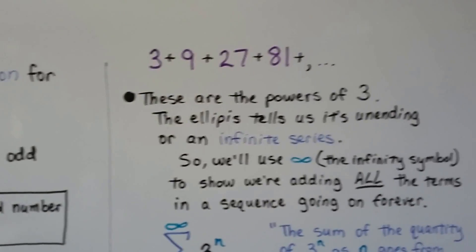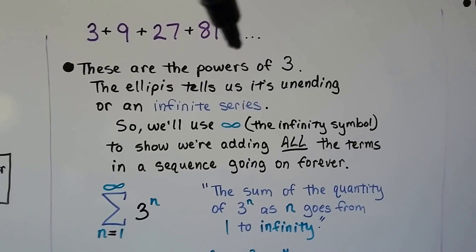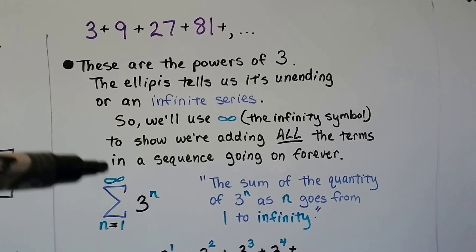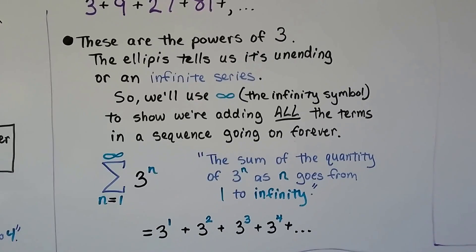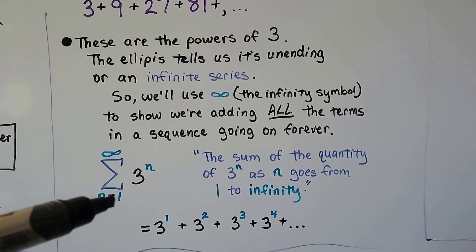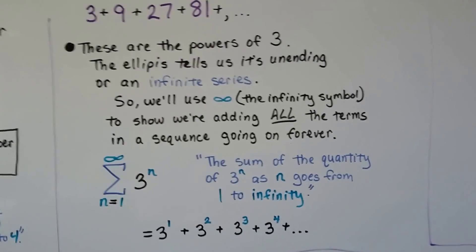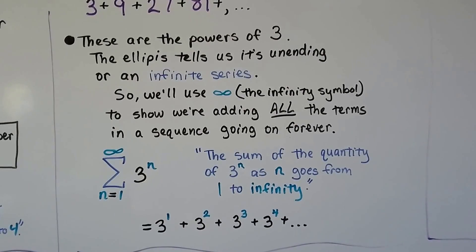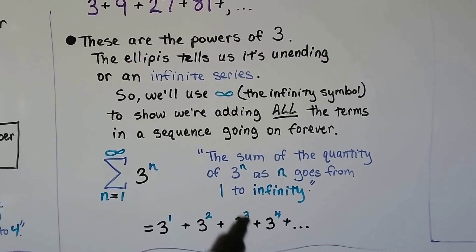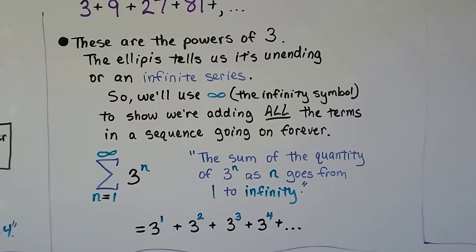Here we have 3 plus 9 plus 27 plus 81 and so on — these are the powers of 3. The ellipsis tells us it's an infinite series, so we're going to use an infinity symbol on top of the sigma to show we're adding all the terms going on forever. n equals 1, and our general term is 3 to the nth. We read this as the sum of 3 to the nth as n goes from 1 to infinity — that's 3 to the first plus 3 to the second plus 3 to the third and so on.